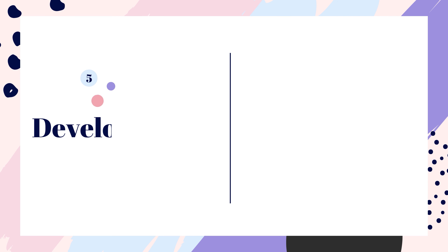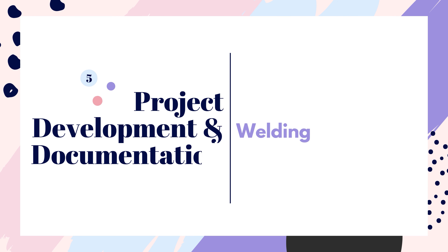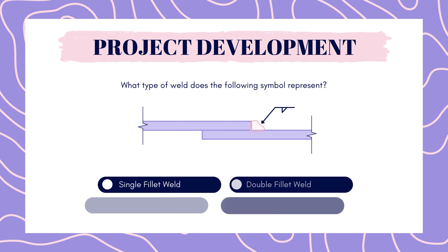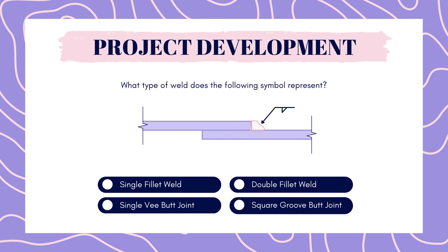Now on to project development. What type of weld does the following symbol represent? Single fillet weld, single V butt joint, double fillet weld, or square groove butt joint. Pause to answer.